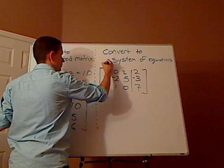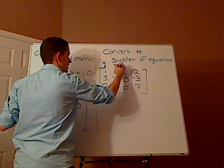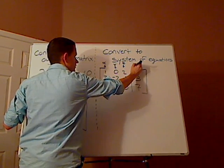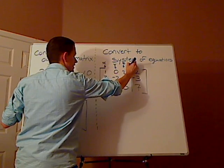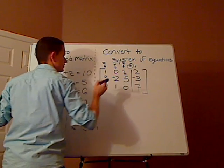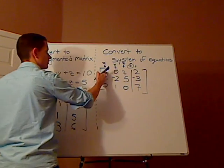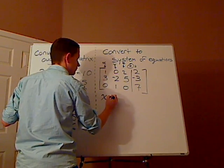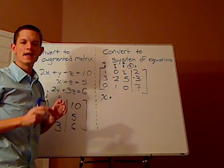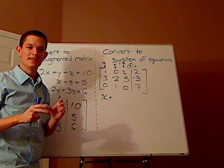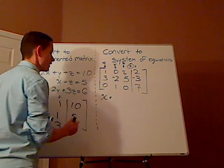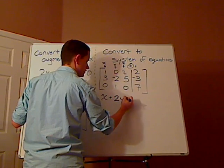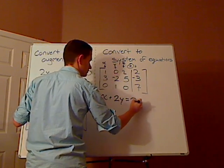Again, these are all the coefficients of x, y, and z. And these are all your answers. And this line is the equal sign. So this would be 1x, so that's just x. Plus, now it's 0y. 0 times y is just 0. It just cancels out. So you're not going to have a y in this equation. But you're going to have 2z equals 2.